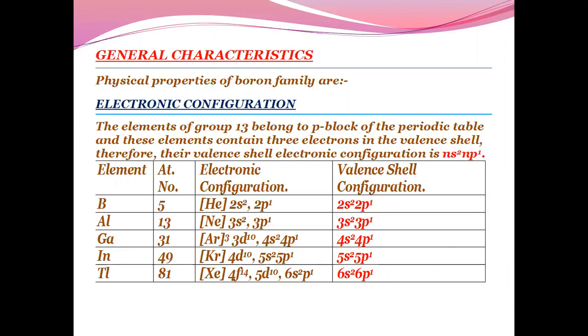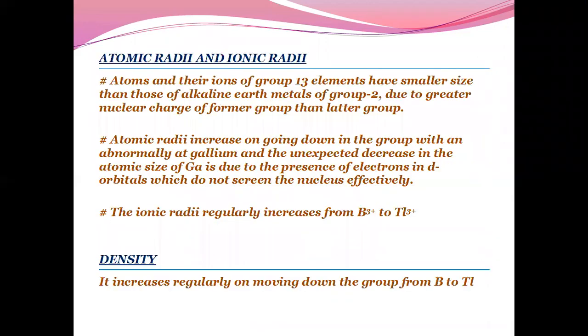We can see here from Aluminium onwards, the entrance of the d-orbital starts taking place, and because of this, inert pair effect and shielding effect occur. The shielding effect of S is more than P, more than D, more than F. This will help us understand the properties better.